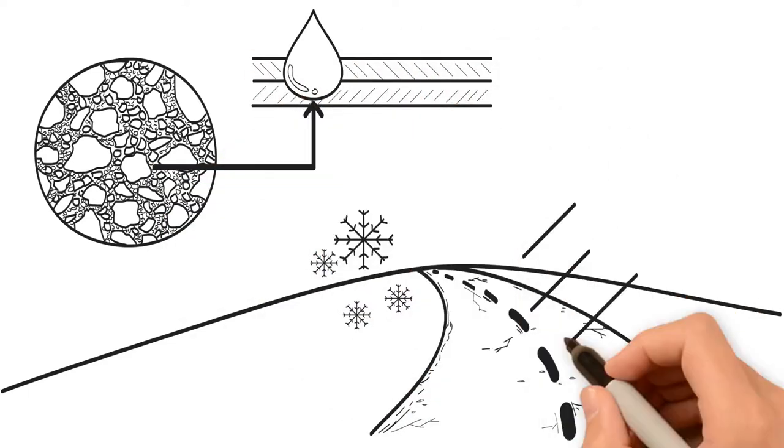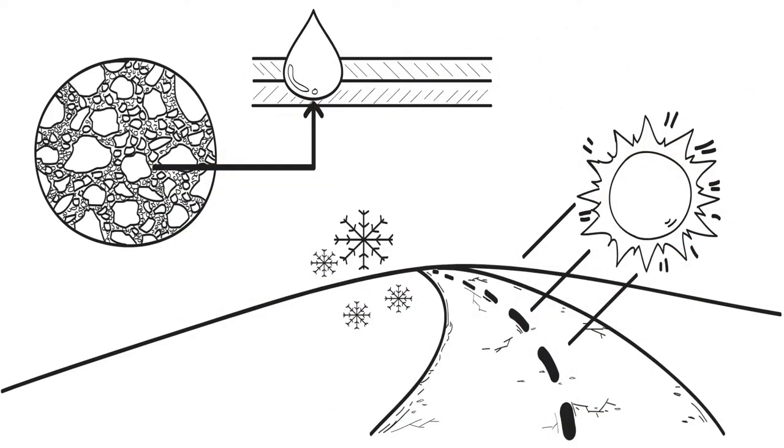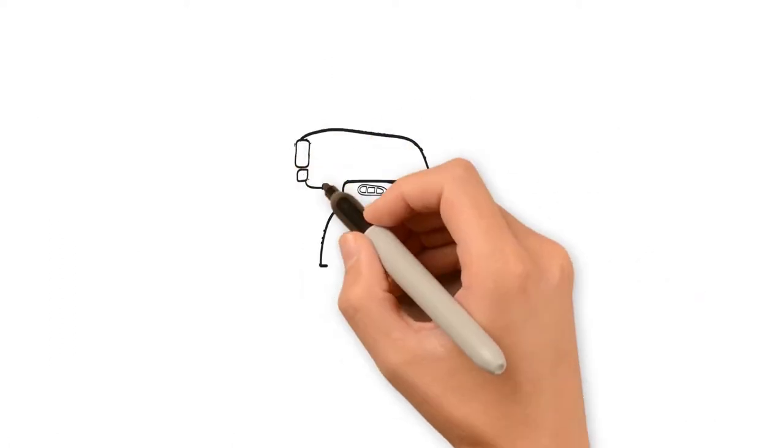Air voids allow water to enter the mat where it can expand and contract as temperatures change. This flexing can crack the pavement.